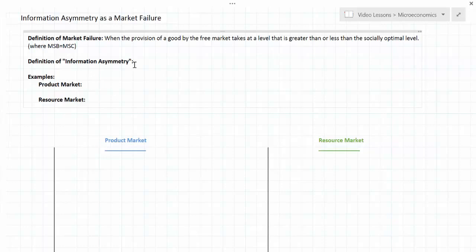In previous lessons we've learned how the existence of positive and negative externalities and public goods results in market failures where the good or service is either over or under provided by the free market or in the case of public goods not provided at all.